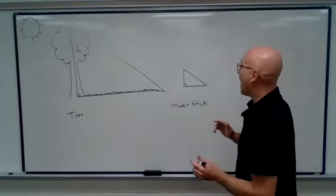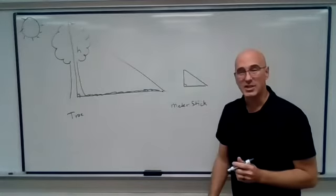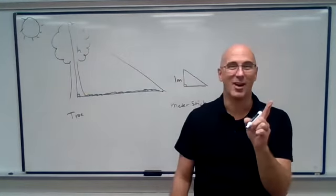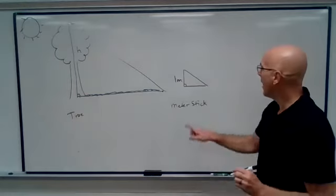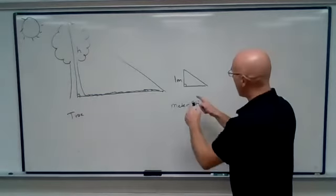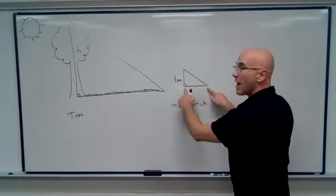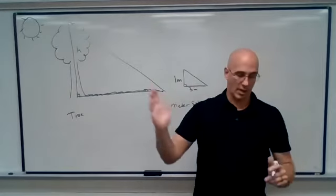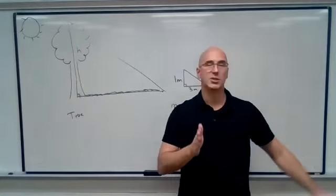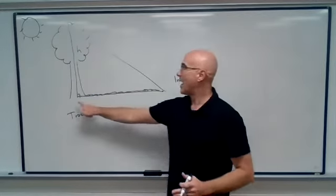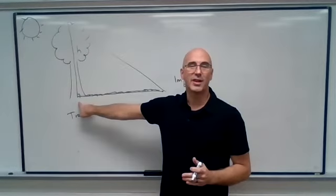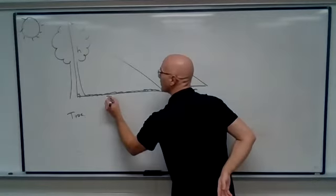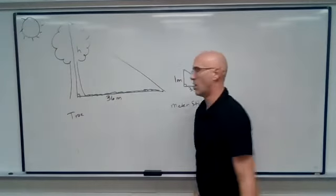So I know that this meter stick is one meter, because a meter stick is one meter long. Yes, we know that. And then I took a tape measure, and I measured how long is this shadow. And I found that it is three meters long. So I took a image, cast a shadow. When I measured this length of the tree's shadow, I found it was 36 meters long.